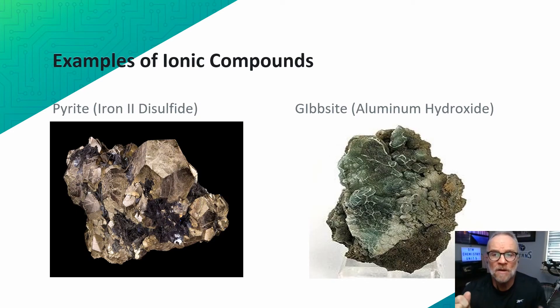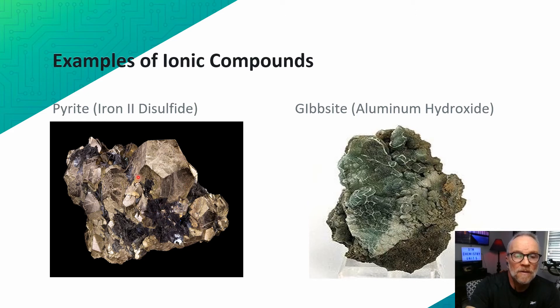We have some examples of ionic compounds. These can be quite beautiful. We have a very attractive crystalline lattice here of bronzy and gray color. This is iron 2 disulfide. And this is gypsumite or aluminum hydroxide.